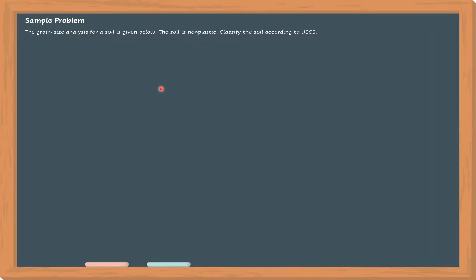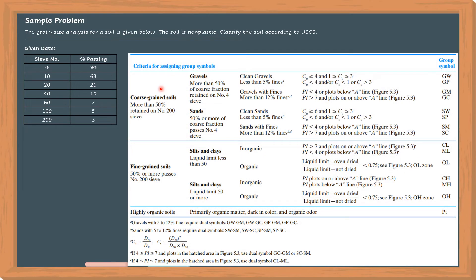Sample problem: the grain size analysis for a soil is given below. The soil is non-plastic. Classify the soil according to USCS. This is the grain size analysis result, and in order to classify the soil, we have to make use of the USCS table, which is this one. You can download or print this table from the geotechnical engineering book.